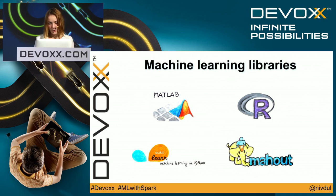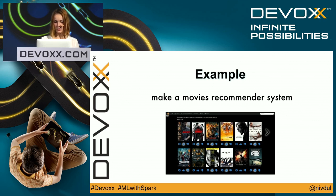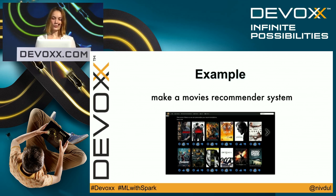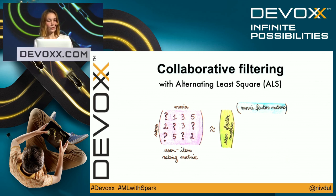Now it's time for the example. I'm sure you're all familiar with recommender systems. Here is an example of a recommender system for movies. Collaborative filtering is commonly used for recommender systems, and here I chose the Alternating Least Squares algorithm — ALS — from the collaborative filtering family.